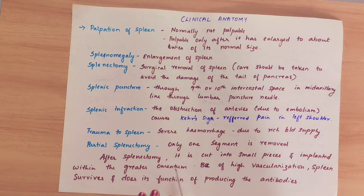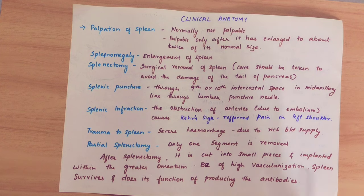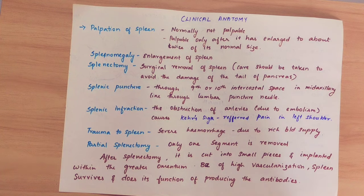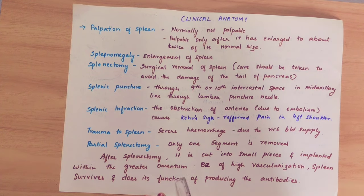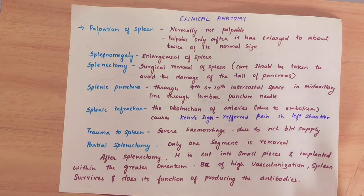The reason for implanting splenic pieces into the greater omentum is that the spleen is highly vascular with a rich blood supply, so the implanted pieces can survive and continue their function. The spleen plays a major role in our immune system — it produces antibodies that are essential for immunity.